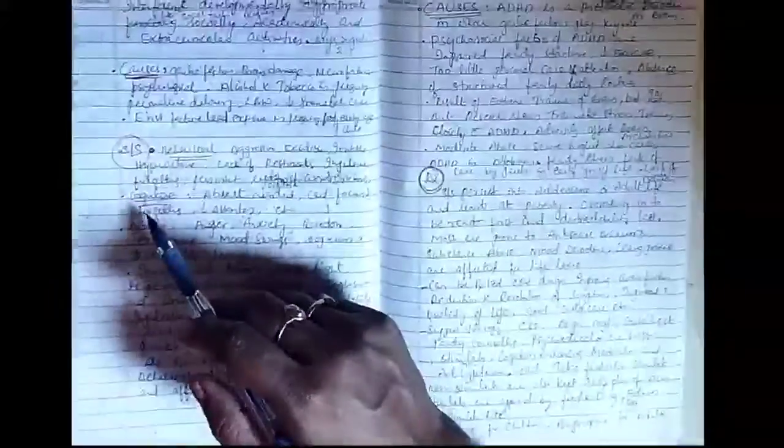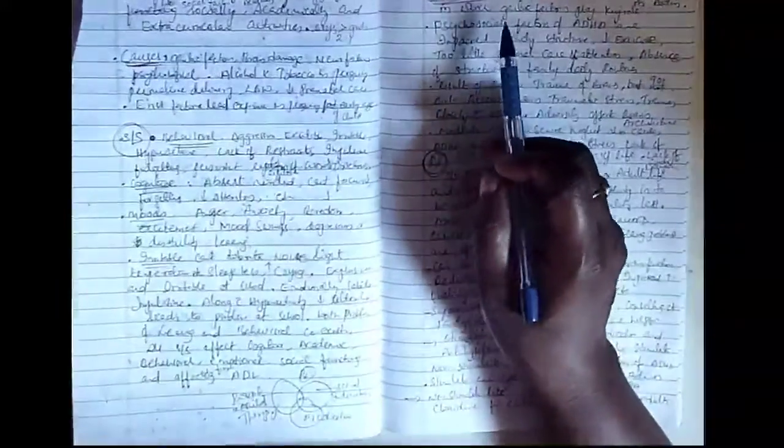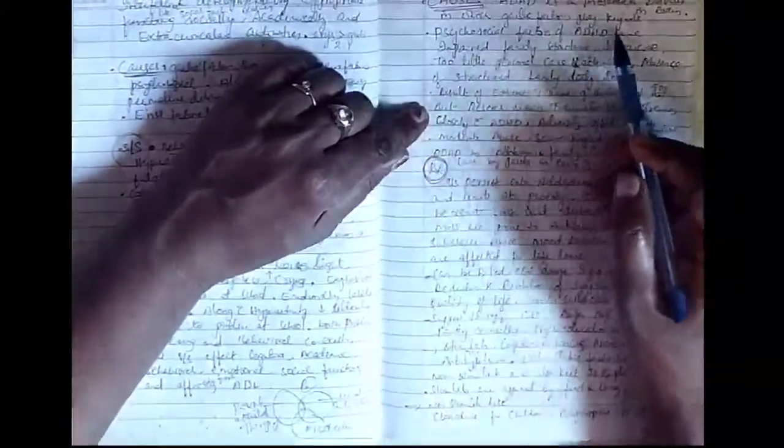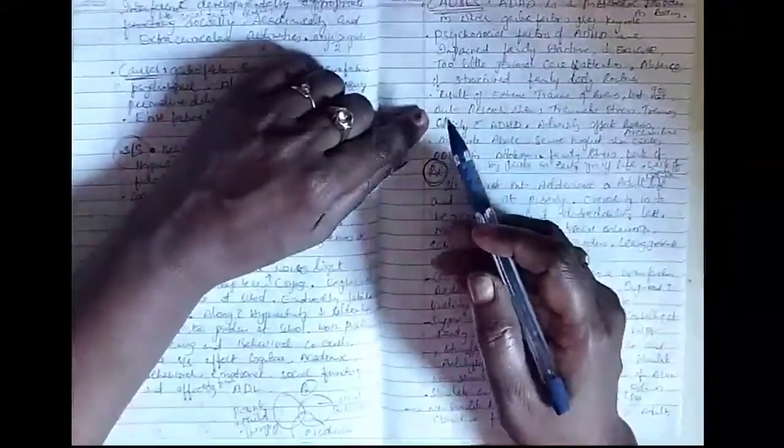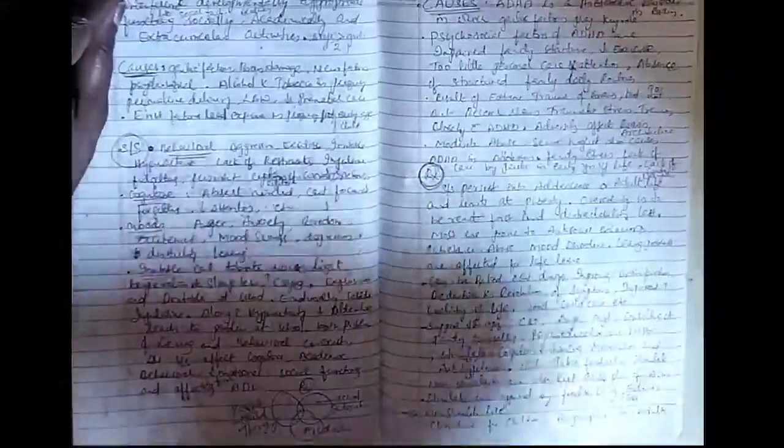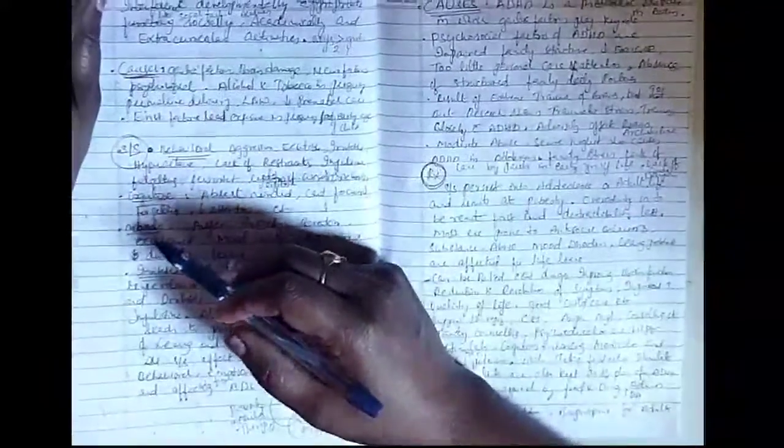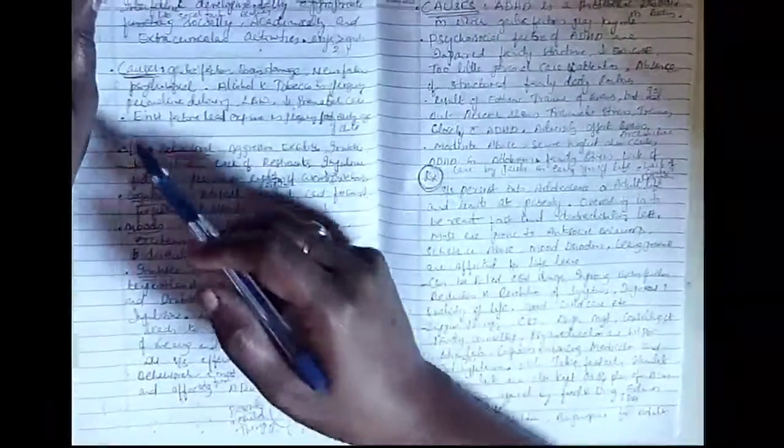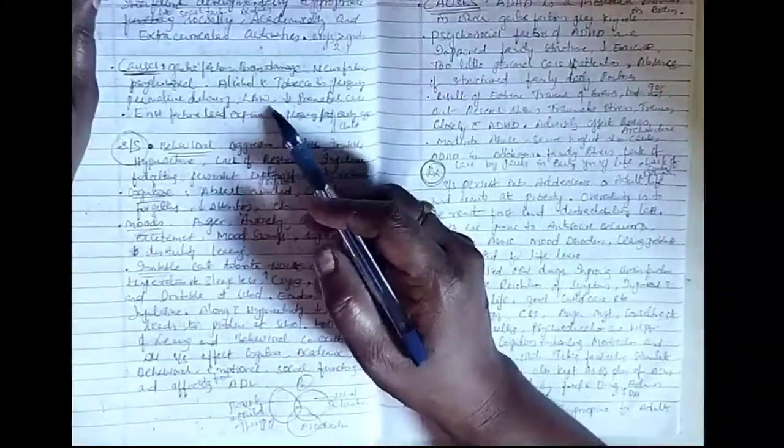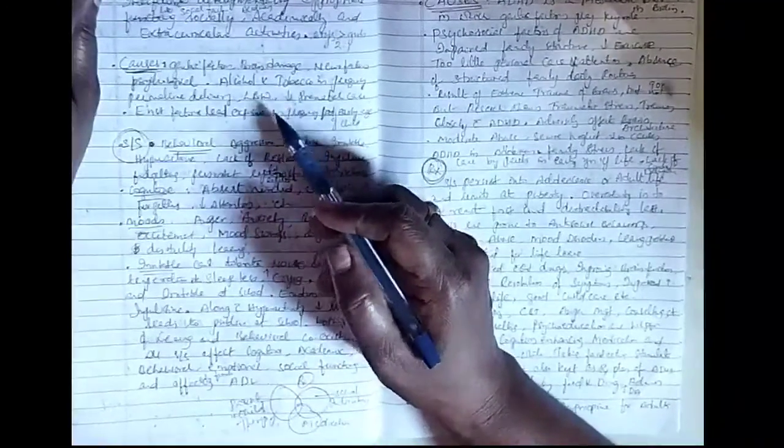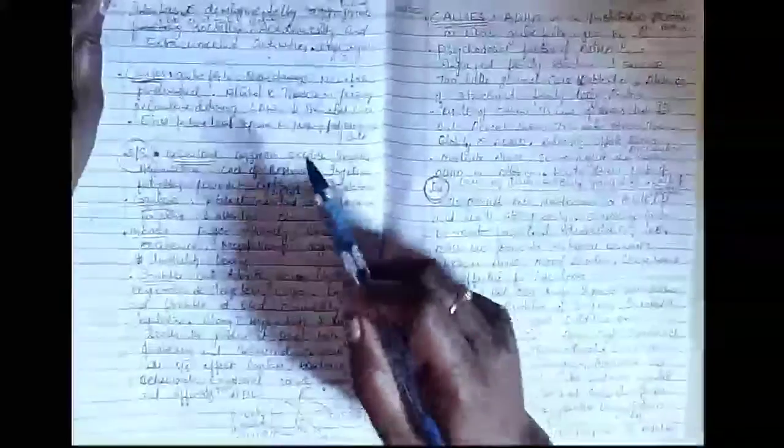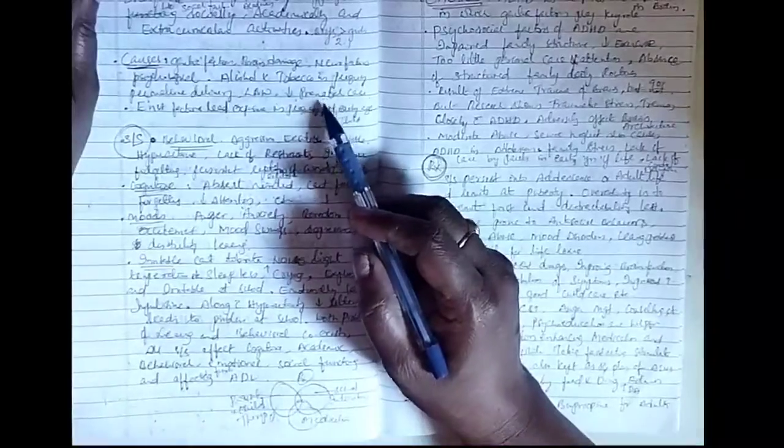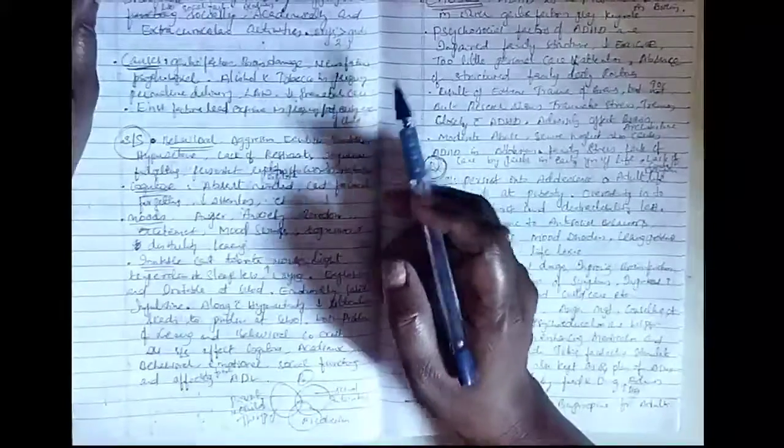The causes can be explained as: initially it is a metabolic disorder in the brain in which genetic factors have key role. The genetic factors, brain damage, neuro factors, psychological causes, alcohol and tobacco in pregnancy used by mother, premature deliveries, LBW that is low birth weight babies below 2.5 kgs at the time of delivery and less prenatal care.